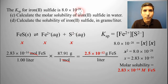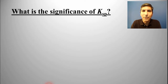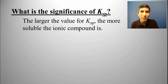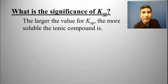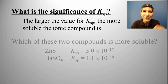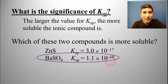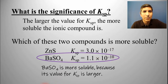Take a look at that Ksp value — 10⁻²⁸ is an exceedingly small number. The larger the value for Ksp, the more soluble that ionic compound is going to be. Lead(II) chloride had a Ksp of about 10⁻⁵ — you could dissolve a visible amount. But iron(II) sulfide's Ksp is exceedingly small. Which of these two compounds is more soluble? It's the one with the larger Ksp — barium sulfate — whose Ksp is larger by a factor of about 10⁷ compared to zinc sulfide. More soluble because its Ksp value is larger.